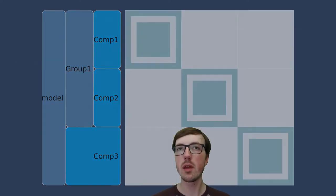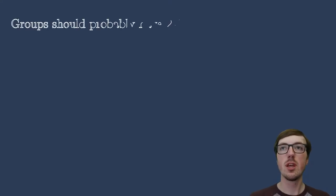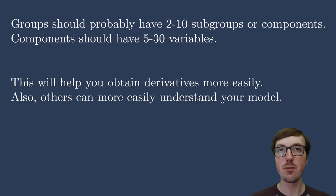So now that we have the extreme basics of groups and what I mean by that in OpenMDAO, let's talk about what the best size for a group is. Here I have some tips, and these are subjective. They're certainly not set in stone. They're not objective. There's no right or wrong answer here, but these are some tips. I'm going to say that groups should probably have two to ten subgroups or components, and then each one of these components can have five to thirty variables.